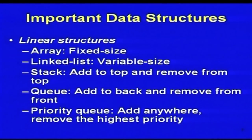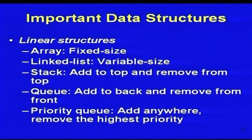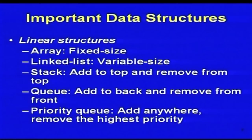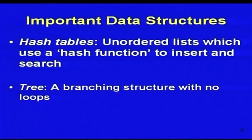In linear data structures, the most common is the array — a fixed-size data structure. Then you have linked list, which is a variable-size data structure. Then you have stack, which is a restricted form of list where you add and delete elements from only one point, at the top of the stack. Then you have queue — people come and stand at the rear of the queue and are taken away from the front. And there is priority queue, where you can add anywhere and remove the highest priority element. Another important structure is the hash table, commonly used for compilers to store variable names.